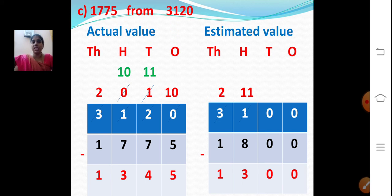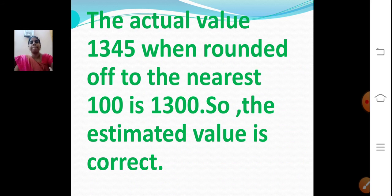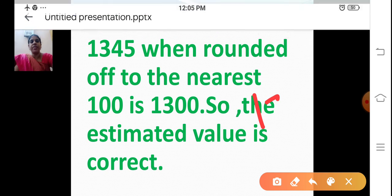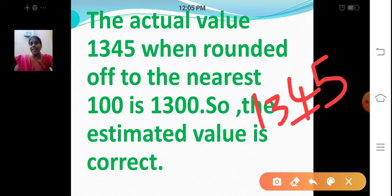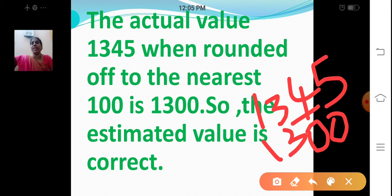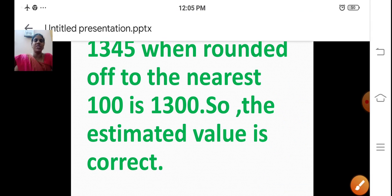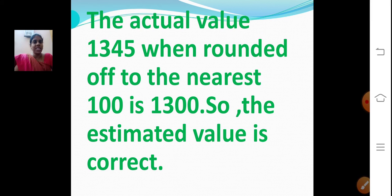What is the actual value? 1345. Estimated value? 1300. Round off 1345 to the nearest hundred — the tens digit is 4, less than 4, so place 0 in ones and tens, hundreds remains same. The estimated value 1300 is correct. The actual value 1345, when rounded off to the nearest hundred, is 1300. So the estimated value is correct.